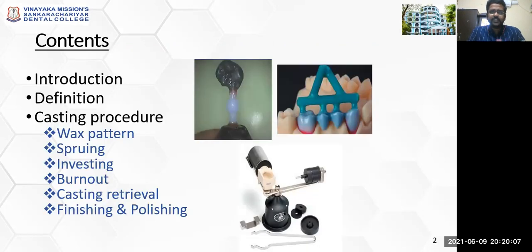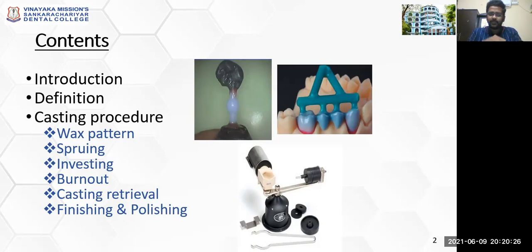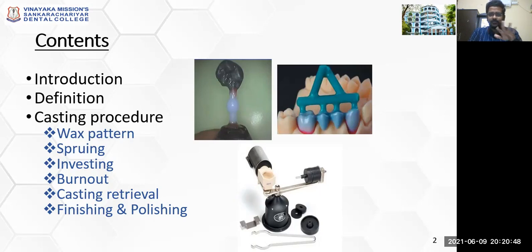The contents for this dental casting procedures session will encompass introduction and definition, what are the casting procedures, wax pattern fabrication, sprueing of the wax pattern, investing the wax pattern, then burnout where the wax is completely burned out, creating a mold space. In that mold space we will do casting, where molten metal is cast into the mold space. Once the metal solidifies we retrieve the casting, then finish and polish and use it for the intended purpose.